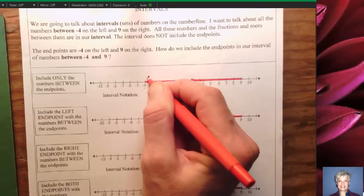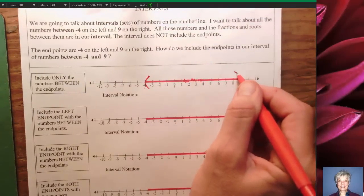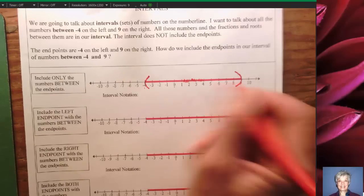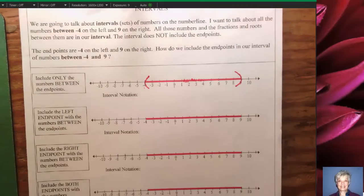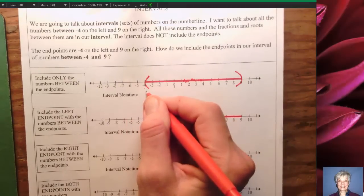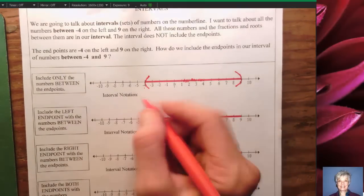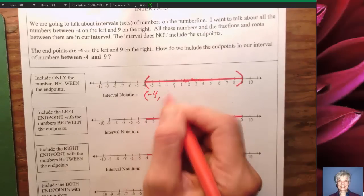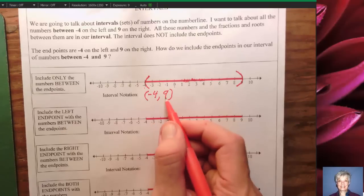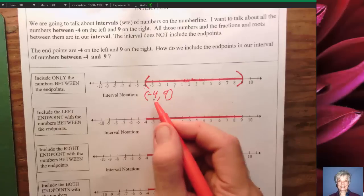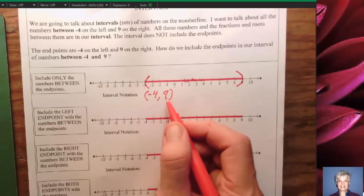To include only the numbers between the end points — meaning negative 4 and 9 are not included — I use parentheses. Some of you may remember using open circles back in high school, but we don't do that in college. We use parentheses. The interval notation is: parenthesis, negative 4, comma, 9, parenthesis — written as (-4, 9). This parenthesis means not including negative 4, and this parenthesis means not including positive 9.